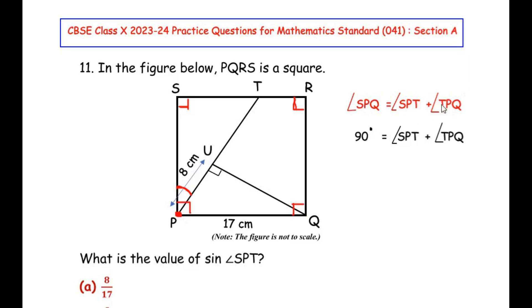Now since we have to find out the sine of angle SPT, let us take the angle TPQ on the other side of equal to sign, and write here angle SPT is equal to 90 degrees minus angle TPQ.